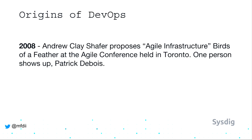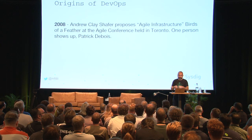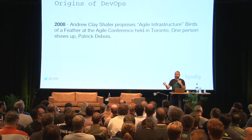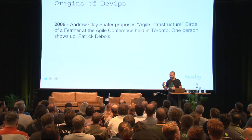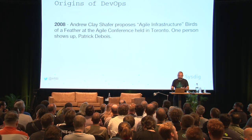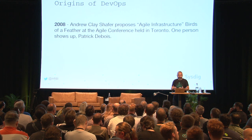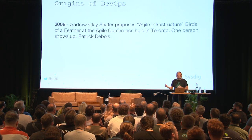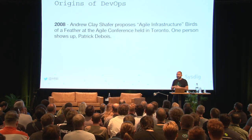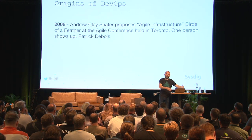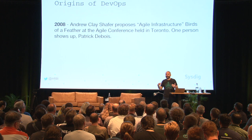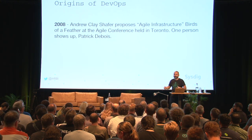As Bridget pointed out, the origins of DevOps come from Andrew Clay Schaefer proposing the idea of agile infrastructure — a birds-of-a-feather session at the Agile conference in Toronto. One person showed up: Patrick Dubois. The other story is that Patrick proposed the talk and the only person who showed up was Andrew. I'm not sure who proposed it and who showed up, but it was something like that.